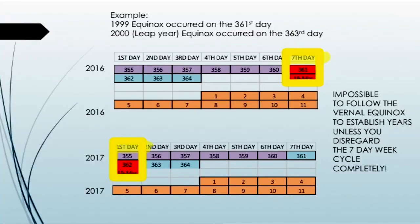Here is an example: an equinox occurring on the 361st day in 2016. The equinox fell on March 19th, which was the seventh day, the Sabbath. However, the first day of the year did not begin until the fourth day of the week. You can see day 361 is when the equinox occurs. You've got to finish out your calculation: 362, 363, 364 — and on the fourth day is the first day of the next year. It is impossible to follow the vernal equinox to establish years unless you disregard the seven-day weekly cycle completely.